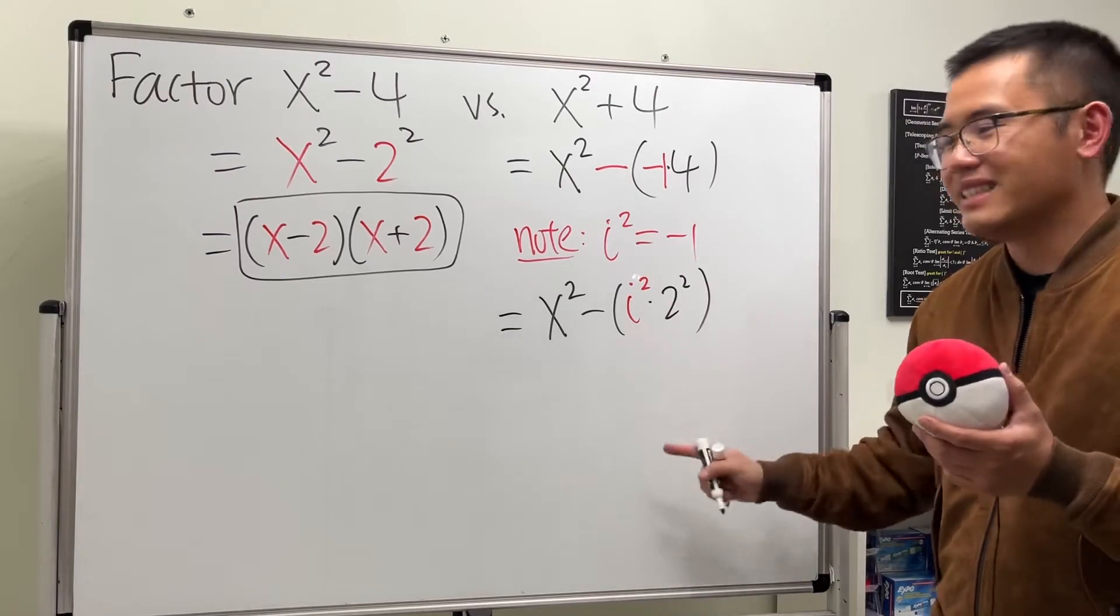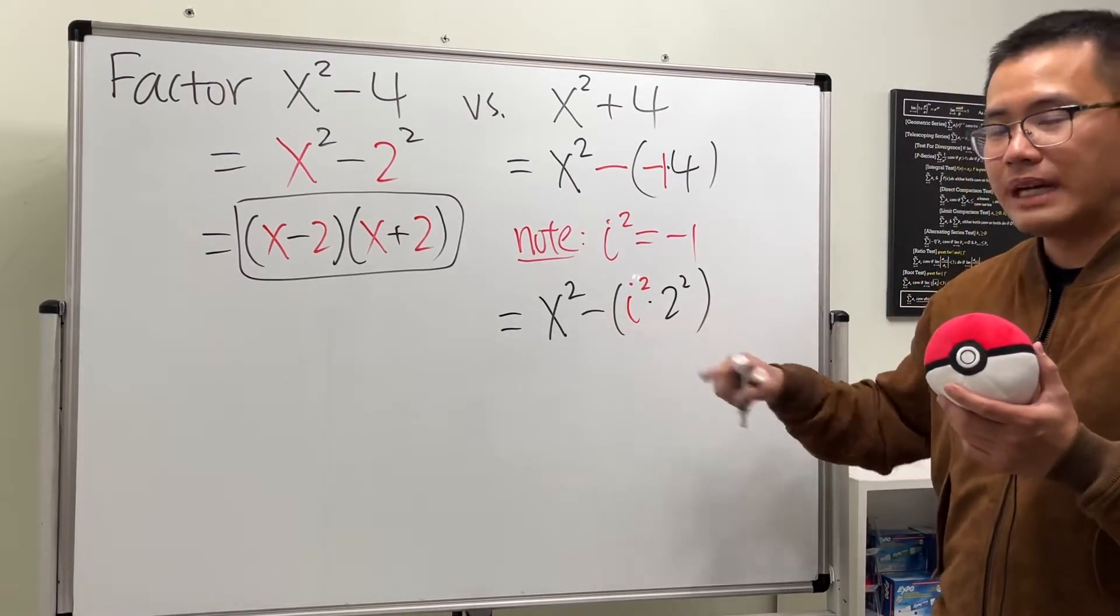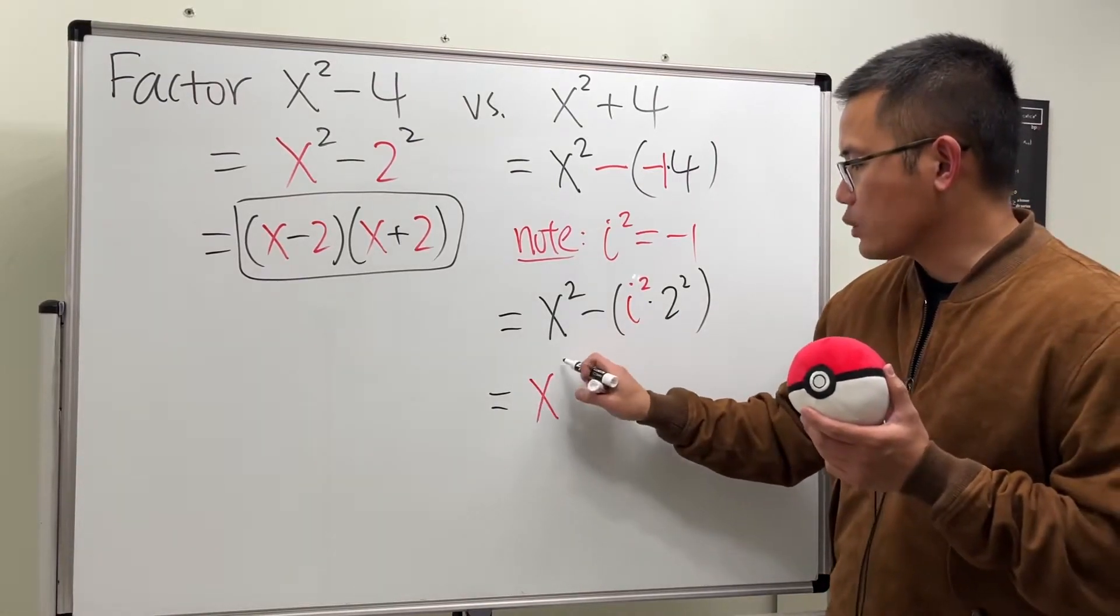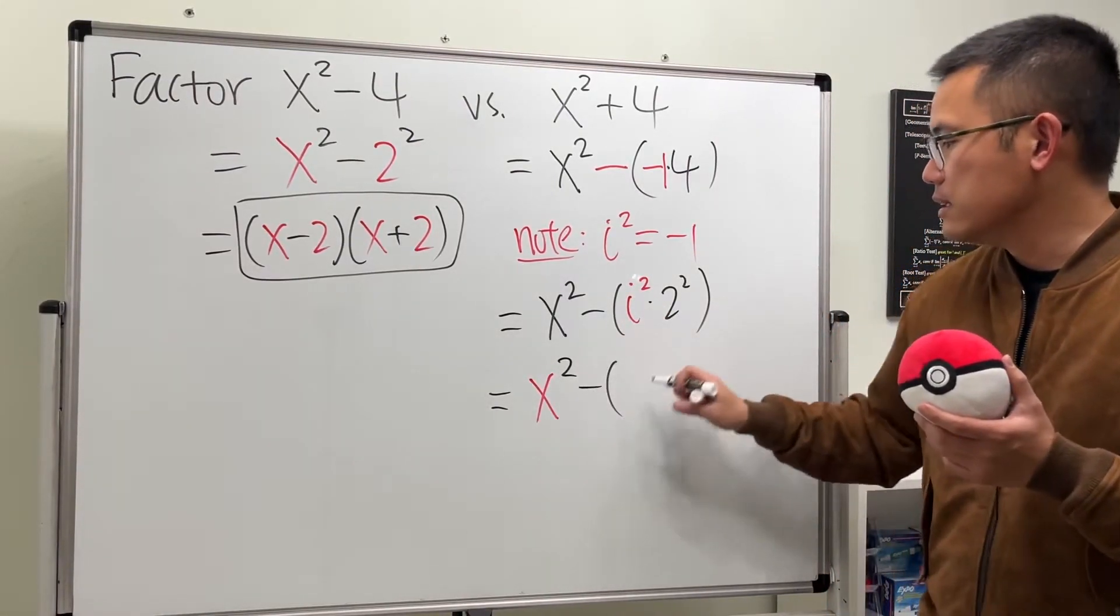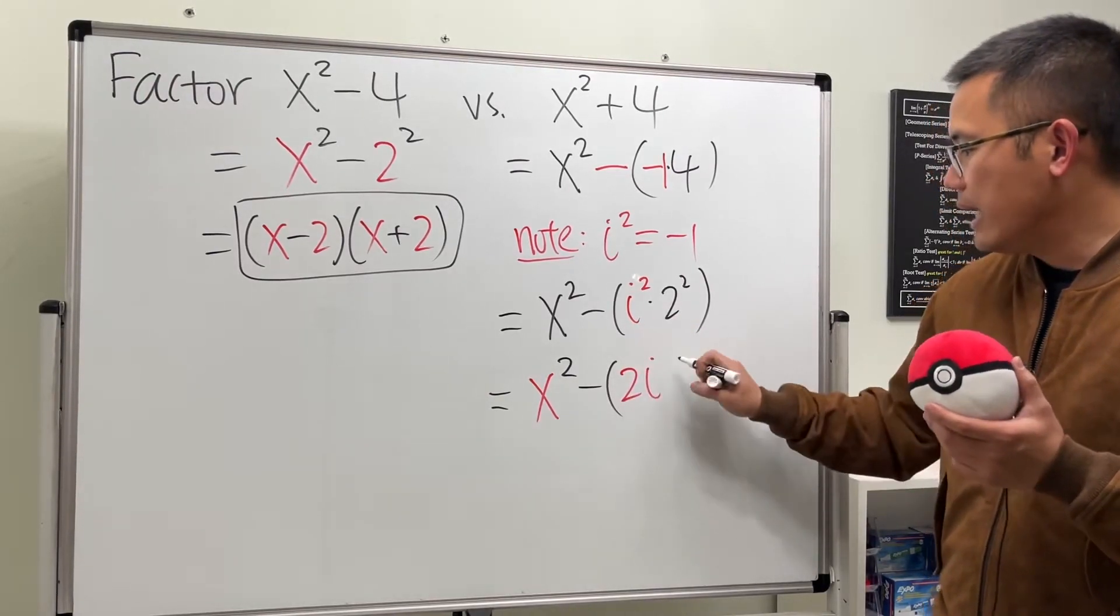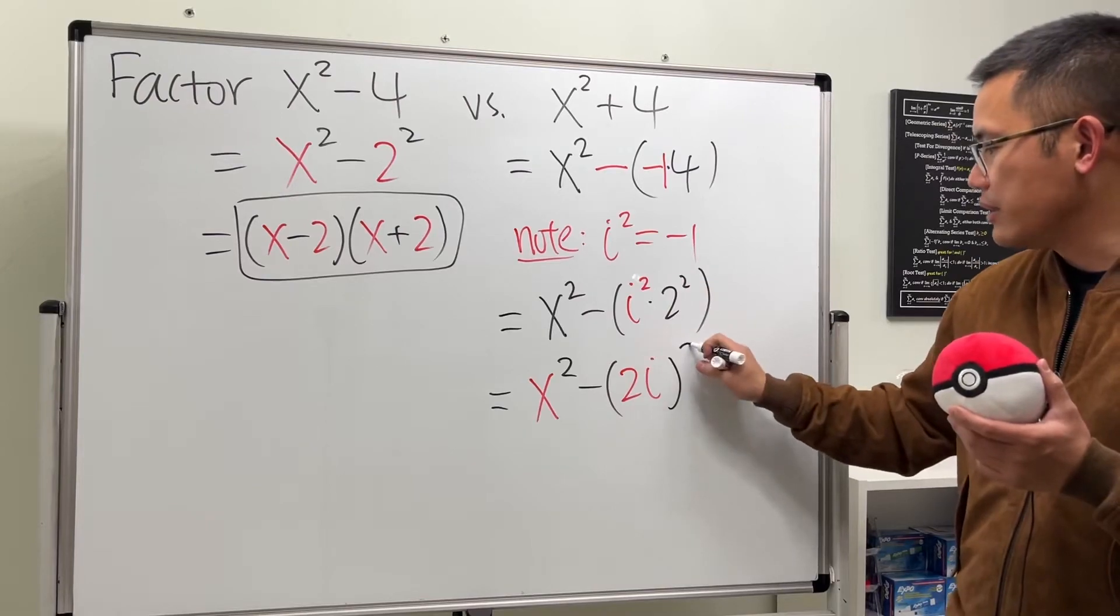Aha! This is, again, a difference of 2 squares, and let me make it super clear for you guys. For the first one, it's just x squared, and then we have minus. The second one is, let's put down the 2 first, and then the i, like this, and then the square on the outside here. Because when you have this, you can put the square on the outside, because 2 and i are just multiplying.